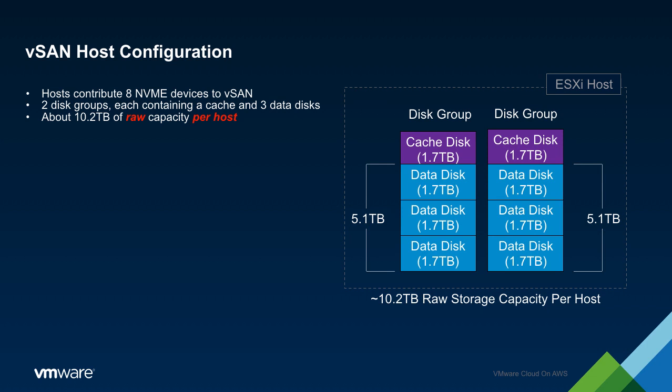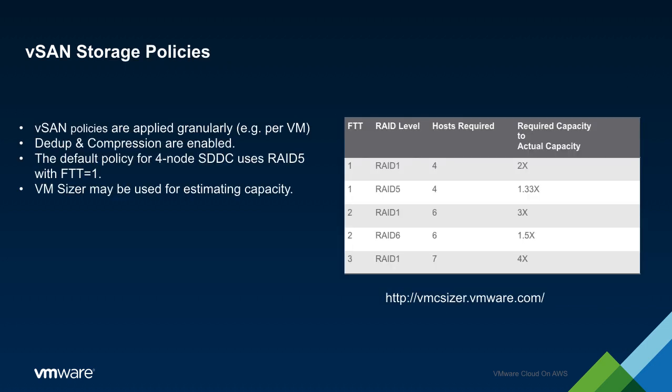It is important to restate that this is 10TB of raw storage per host. The overall raw storage increases by 10TB for every host added to the SDDC. Each host contributes roughly 10TB of raw storage to the SDDC. Actual usable capacity, however, is a function of a couple of variables.